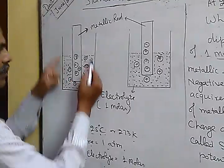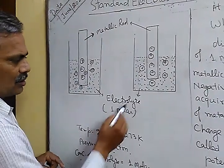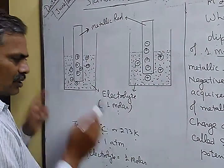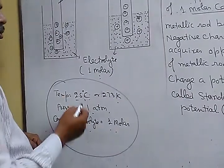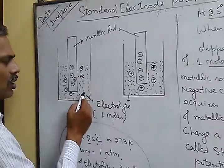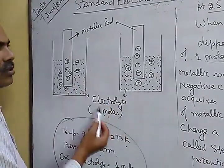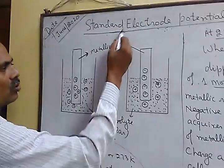When metallic rod is dipped into the electrolyte, concentration of electrolyte is 1 molar. At these conditions, when metallic rod is dipped into the electrolyte of 1 molar concentration, a potential is developed which is called standard electrode potential.